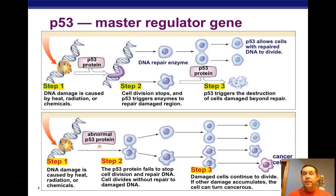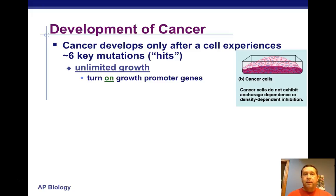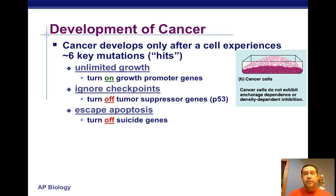This is showing you graphically what happens with P53 when it's functioning normally and when it's damaged and cancer can occur. Cancer develops only after a cell experiences six key mutations or hits: unlimited growth — it turns on growth-promoting genes, it ignores checkpoints, it turns off tumor suppressor genes like P53, it escapes apoptosis by turning off the cell suicide genes, and it becomes immortal.